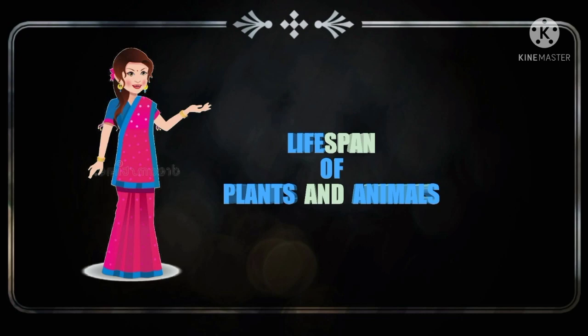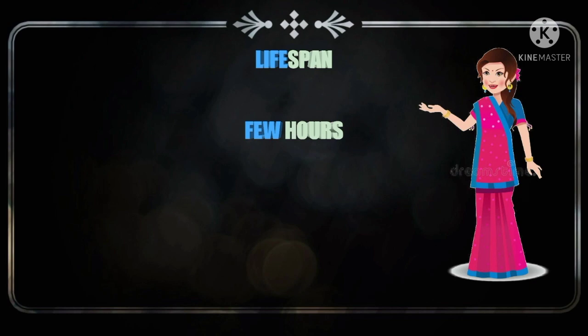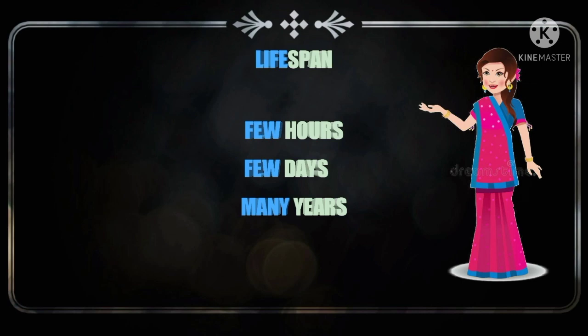Students, you all know that living things do not live forever, right? They live for a certain time. After that, they die. So, all living things live for a certain period of time called their lifespan. Some living things have a lifespan of only a few hours or a few days, while some living things can live for many years.